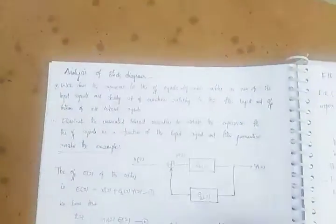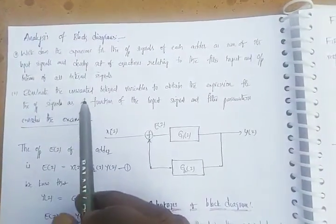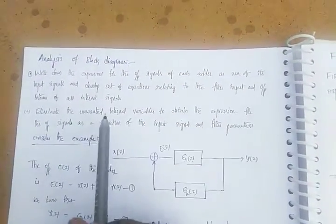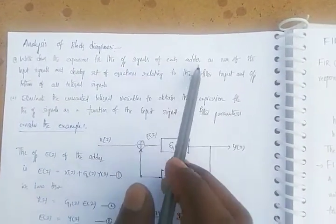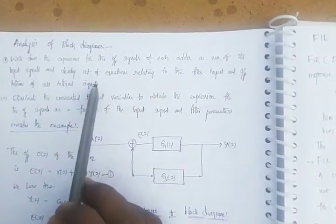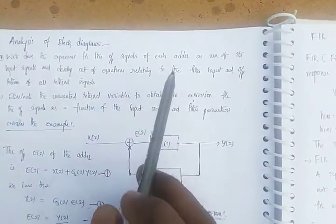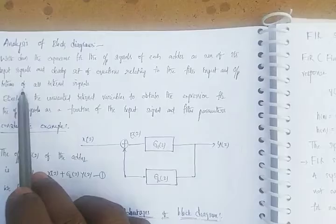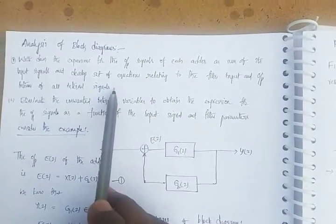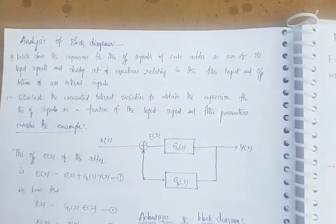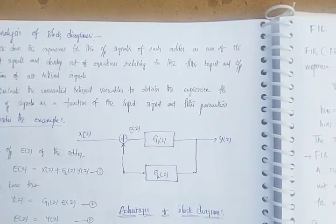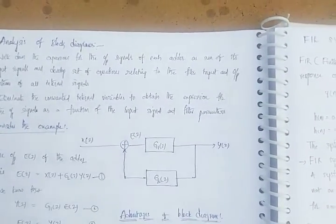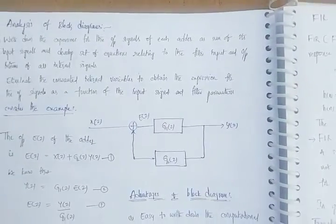Next, analysis of a block diagram. Write down the expressions for output signals of each adder as a sum of its input signals and develop a set of equations relating to that filter input and output in terms of internal signals. Then eliminate the unwanted internal variables to obtain the expression for the output signal as a function of the input signal and filter parameters.